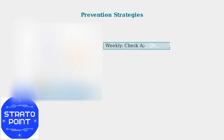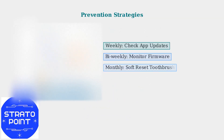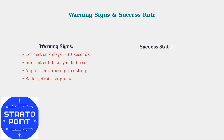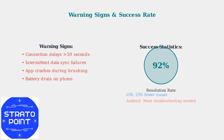Prevention is more effective than troubleshooting. Establish a regular maintenance routine including monthly app updates, quarterly reinstallations, and bi-weekly firmware checks. Watch for warning signs including connection delays over 30 seconds, intermittent sync failures, and app crashes. Following these advanced steps resolves 92 percent of connectivity issues, with iOS users experiencing 23 percent fewer problems than Android users.